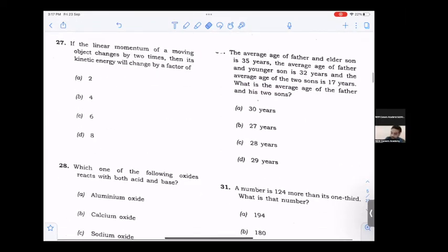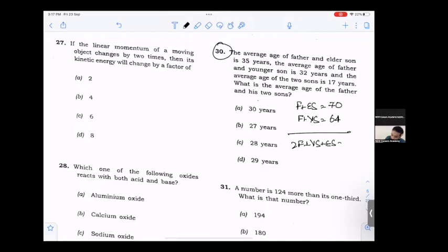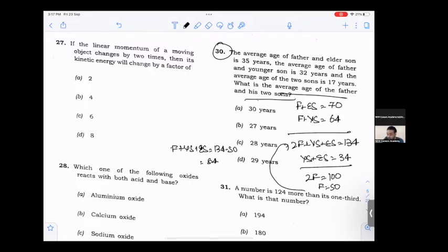The average age of father plus elder son is 35, so combined age is 70. Father plus younger son average is 32, so combined age is 64. Adding both: twice father plus younger son plus elder son is 134. The average age of two sons is 17, so their combined age is 34. Therefore father's age is 134 minus 34 equals 100, divided by 2 equals 50. Average age of father and two sons is (50 plus 34) divided by 3, which is 28 years.